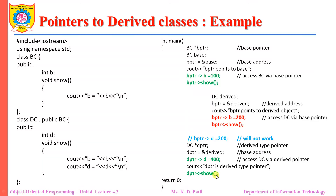As I mentioned, if the members belong to that derived class and those members are not inherited from the base class, then we cannot access those members using the base pointer of the base class. But we can access them using the derived type pointer of that respective derived class. Please remember that if we create a base pointer from the base class, then only members which are inherited from the base class can be accessed. Members which belong to the derived class independently cannot be accessed by the base pointer.